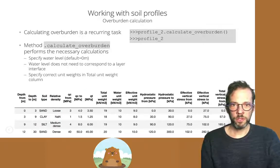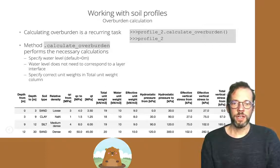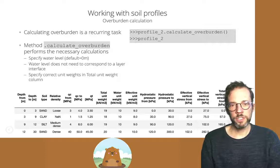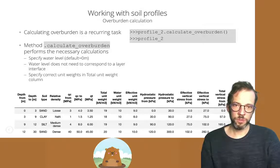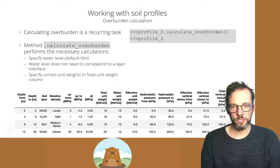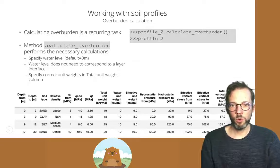Overburden calculations are straightforward with Groundhog. Since we have the total unit weight column, we simply need to know where the water table is — by default it's at ground surface, 0 meters. Layers above the water table should have the dry unit weight as total unit weight; layers below should have the saturated bulk unit weight. The calculate_overburden method takes a water_table argument, and all effective and total stresses plus hydrostatic pressures follow automatically.